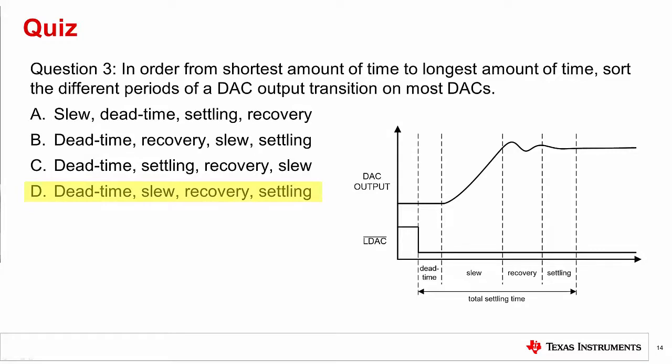The answer is D, but B is also acceptable. The shortest period of time is most often dead time, as it is mostly digital propagation delay. The next shortest is usually the slew period or the recovery period. On devices that have very small capacitive loads, the recovery period may be very short as well. On nearly all DACs, the final settling period is the longest.